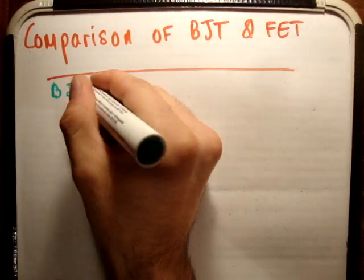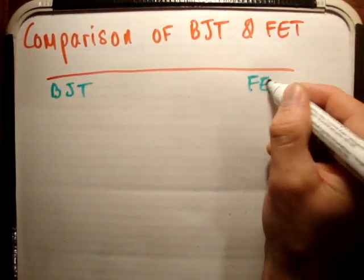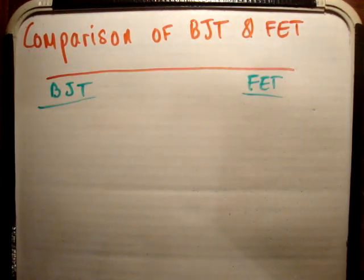On the left here I'm going to talk about the BJT, and on the right we're going to talk about a field effect transistor. I'm going to do this very quickly.